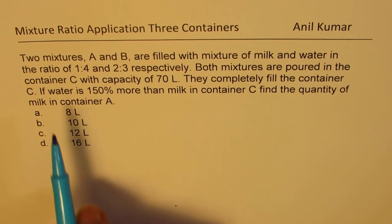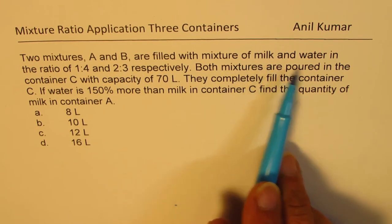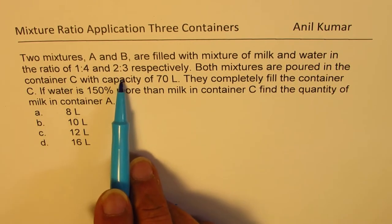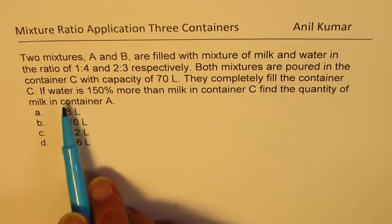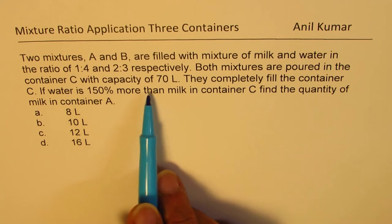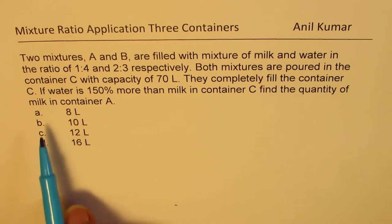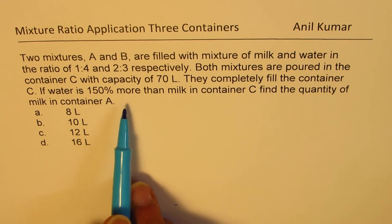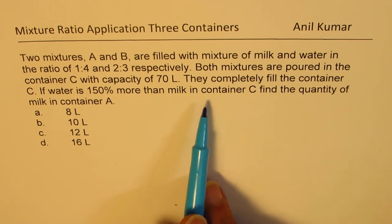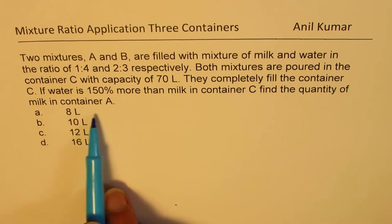Question here is: two mixtures A and B are filled with mixtures of milk and water in the ratio of 1 is to 4 and 2 is to 3 respectively. Both mixtures are poured in the container C with capacity of 70 liters. They completely fill the container C. If water is 150% more than milk in container C, find the quantity of milk in container A.